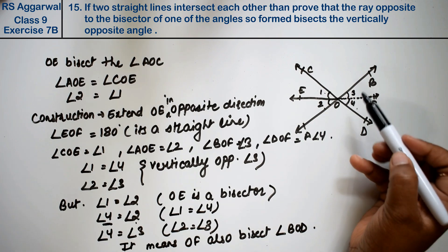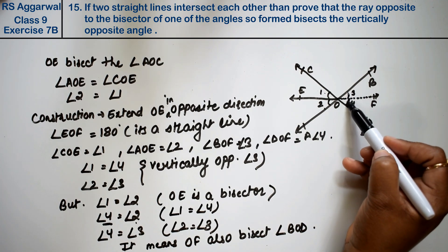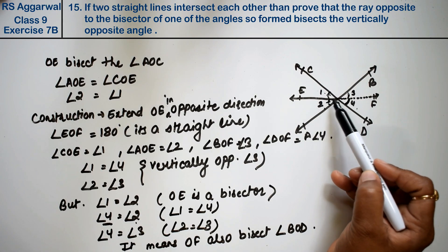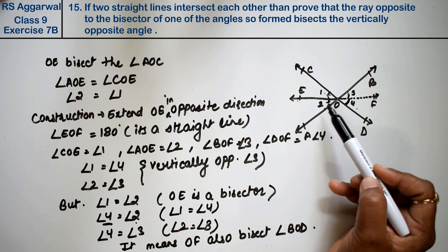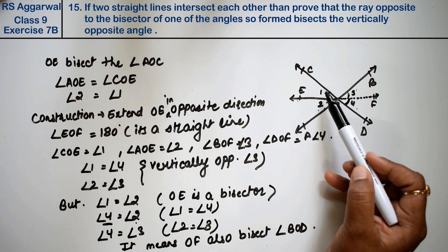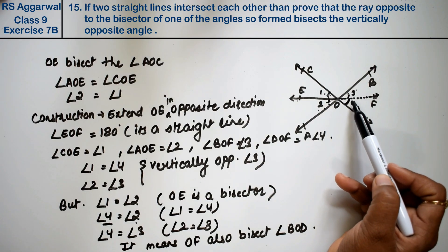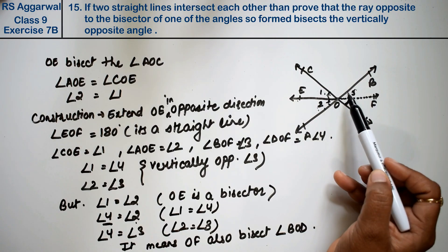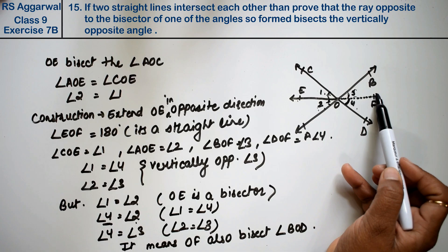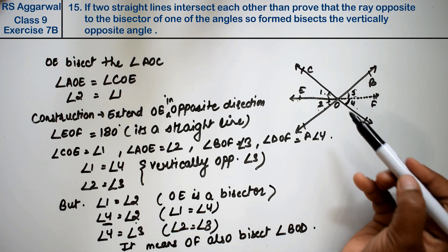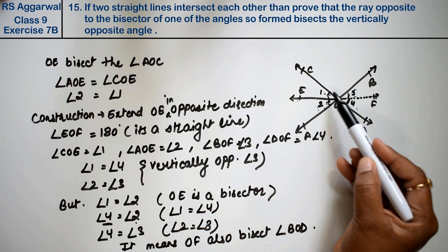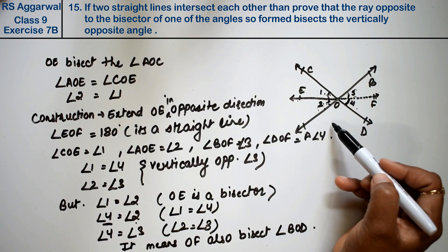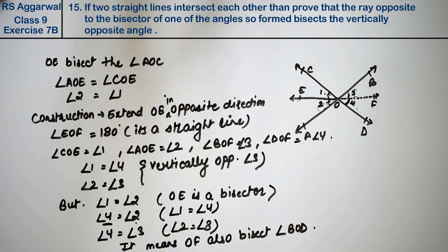We had to prove this - that these angles are equal. How did we prove it? We knew this angle equals this angle because OE bisects. But angle 2 equals angle 3, and angle 1 equals angle 4. Why? Because these are vertically opposite angles from two intersecting lines, where we extended this. So when this was equal to this, and this was equal to this, then these two are also equal. But when these two were equal, then these two are also equal. Hence proved.